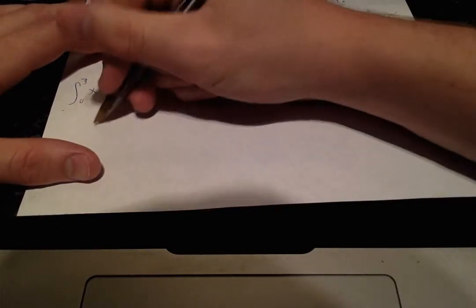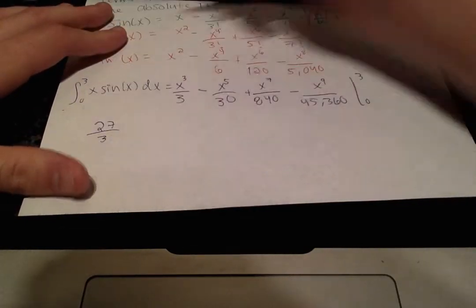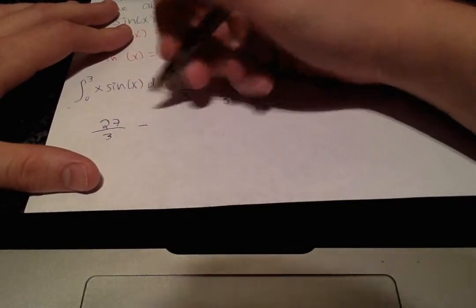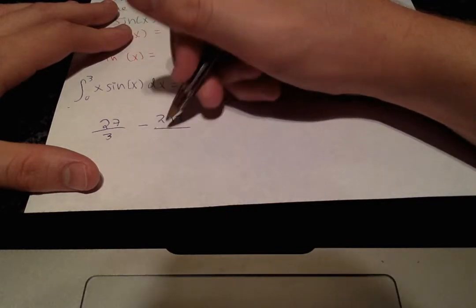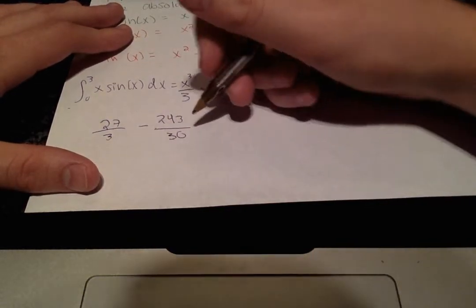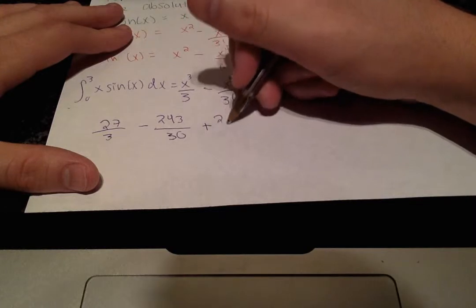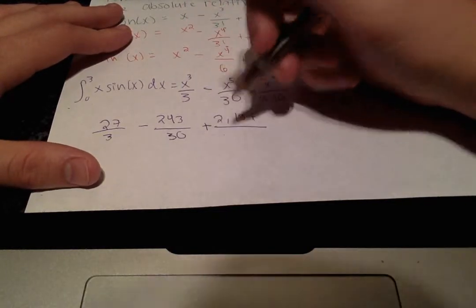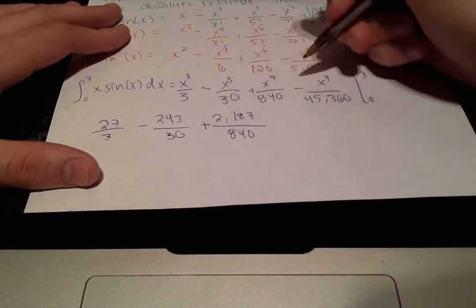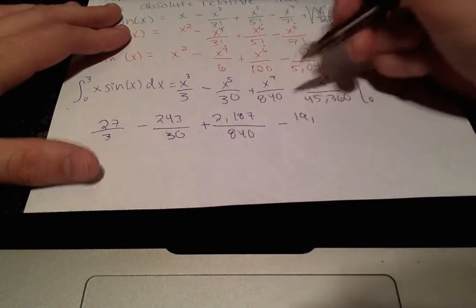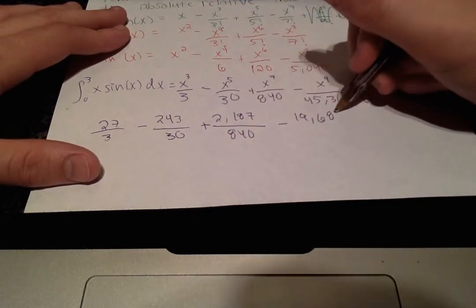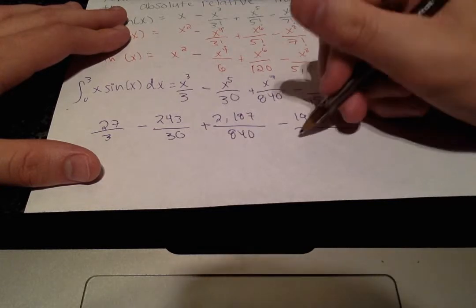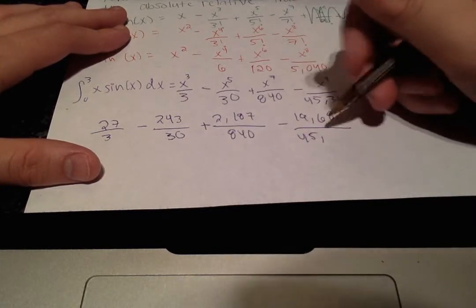we get 27 over 3 minus 243 over 30 plus 2,187 over 840 minus 19,683 over 45,000.